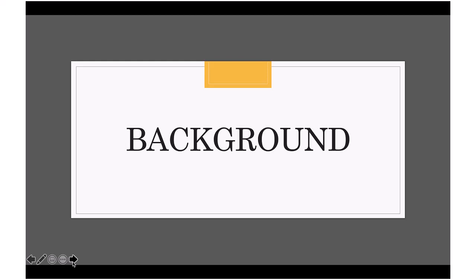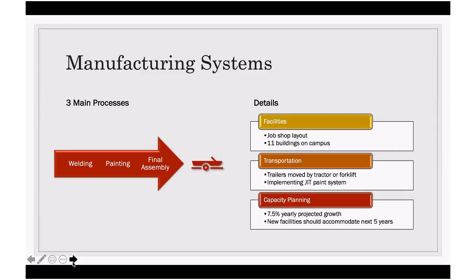Now we'd like to present some background information for our capstone project. Felling Trailers uses three main manufacturing systems to assemble their trailers: first welding, then painting, and lastly final assembly. The facilities replicate a job shop layout spread out to 11 different buildings on campus. Trailers are transported by tractor or forklift. Felling is also implementing a just-in-time paint conveyor system. Capacity planning shows a 7.5% yearly projected growth, and new facilities should accommodate the next five years.